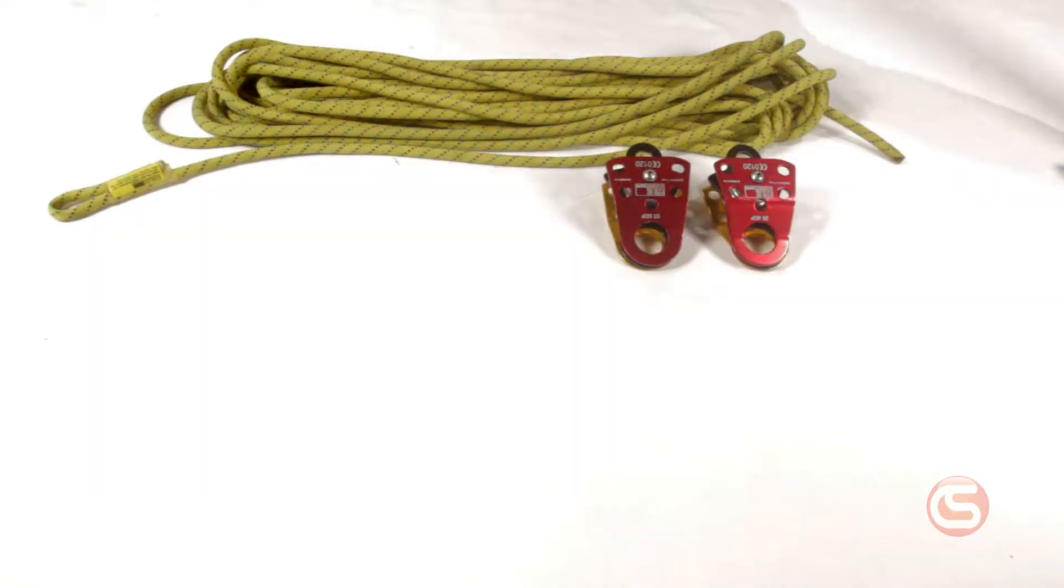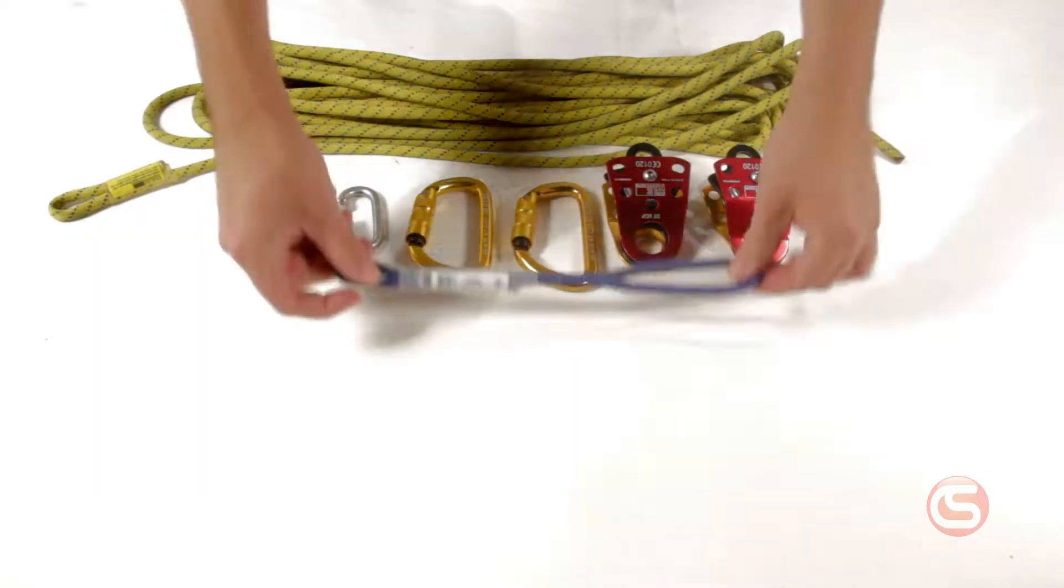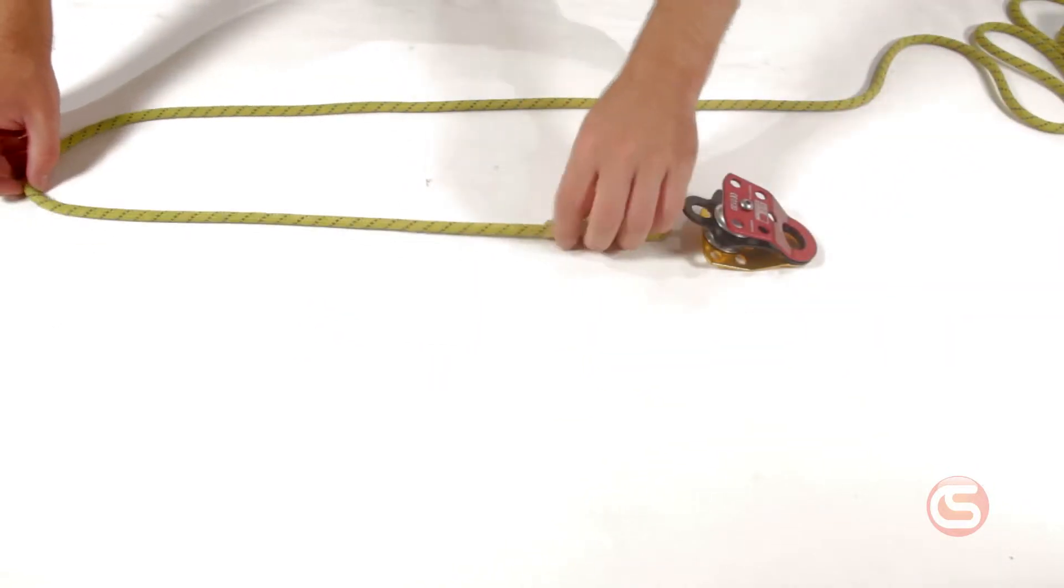While it arrives disassembled, it's one of the simplest haul systems to set up. We'll go over that right now. First, you want to lay everything out on a table or workstation and give yourself a couple feet of the 8mm rope to work with.